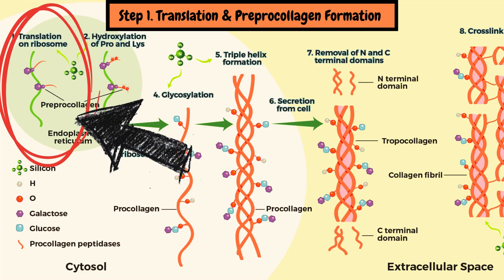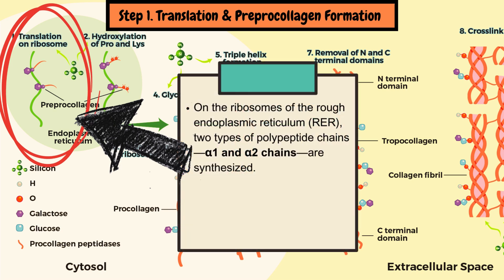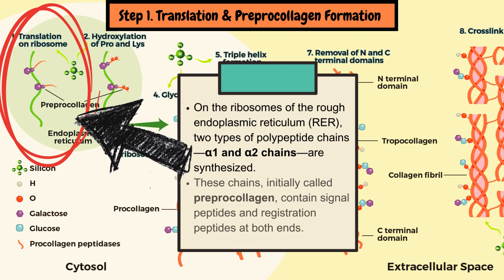Step 1: Translation and pre-procollagen formation. On the ribosomes of the rough endoplasmic reticulum, two types of polypeptide chains — alpha-1 and alpha-2 chains — are synthesized. These chains are initially called pre-procollagen and contain signal peptides and registration peptides at both ends.